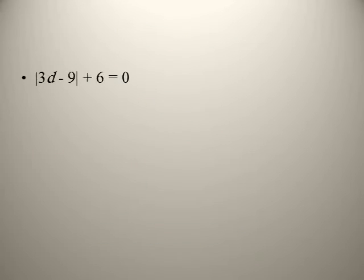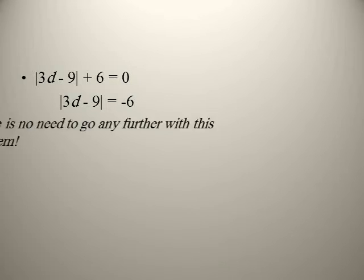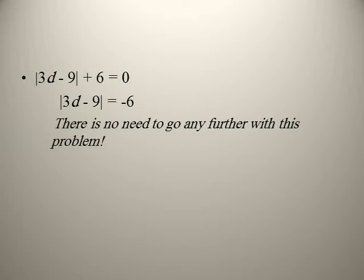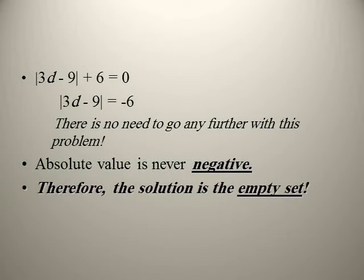Solve |3d − 9| + 6 = 0. Find the value of the absolute: 3d − 9 = −6. Since the absolute value can never be a negative number, there is no solution for this equation.